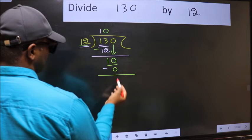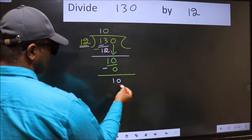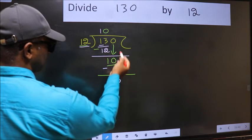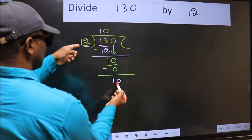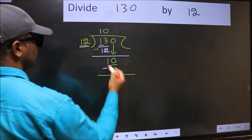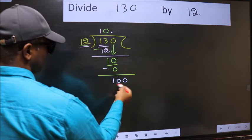Now you should subtract. 10 minus 0, 10. Over here, we did not bring any number down, and 10 is smaller than 12. So now you can put dot and take 0. So, 100.